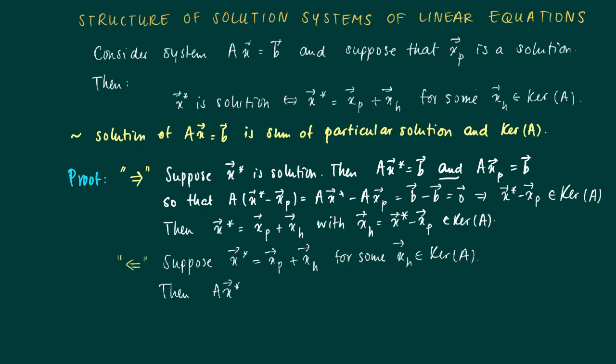Then we just calculate A times XP plus XH equals A times XP plus A times XH. We know that A times XH, since XH belongs to the kernel, yields zero. A times XP equals B. So what we finally get is just the vector B. So this means that X star is a solution of the system. So now we're done.